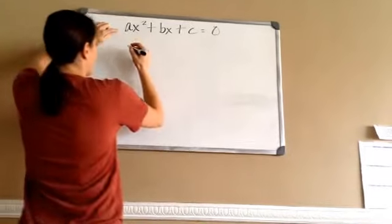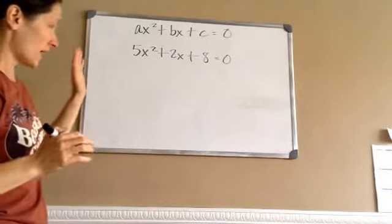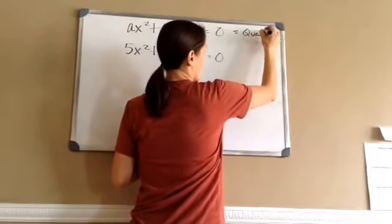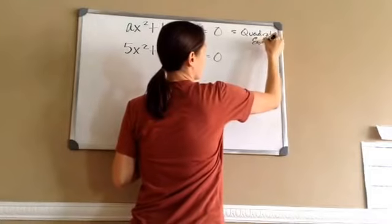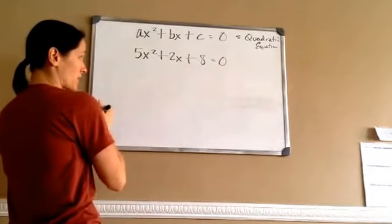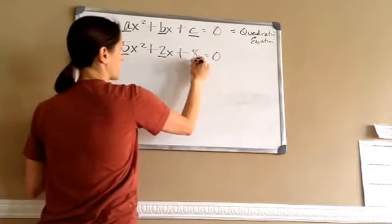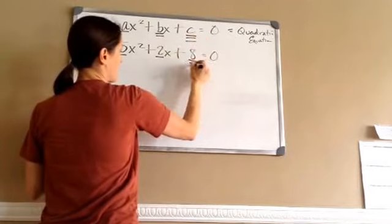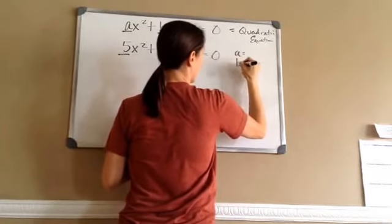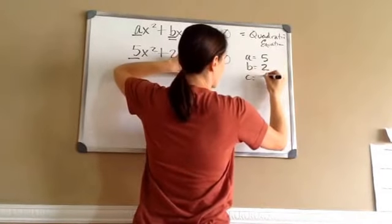Let's say I had 5X squared plus 2X plus 8 equals 0. In a minute, you're going to learn about the quadratic formula — this is the quadratic equation. It's going to be best for you to underline A, B, and C. We're going to write those out to the side: A is 5, B is 2, and C is 8.